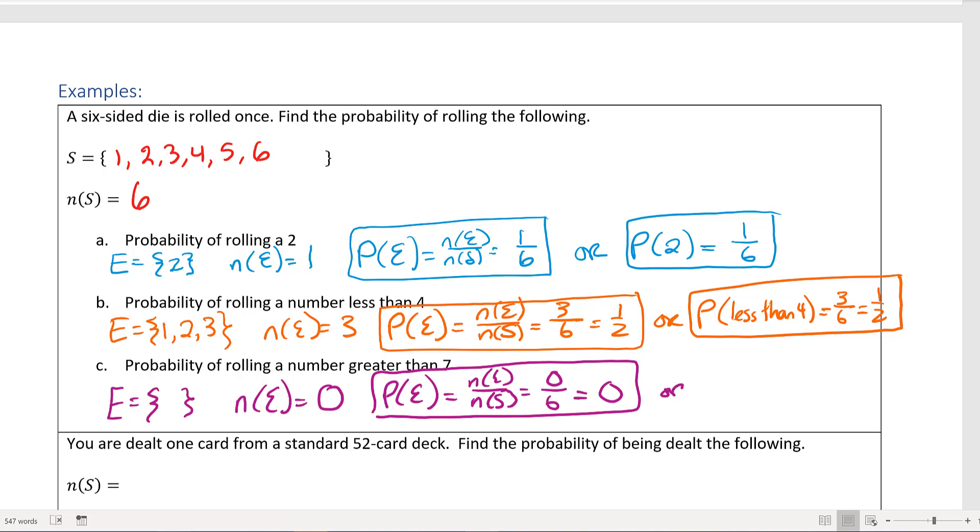A shorter way of writing that without the E notation would be P(greater than 7) is equal to 0 over 6, or just 0.